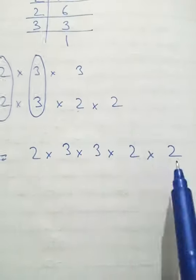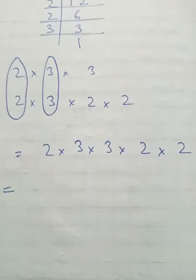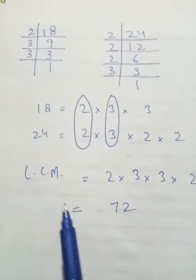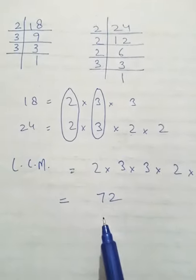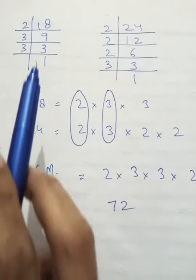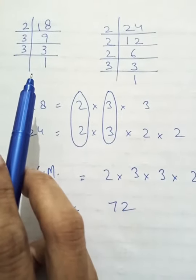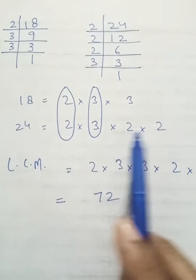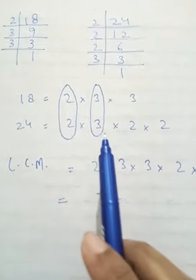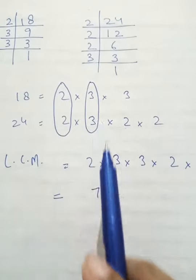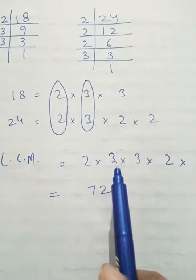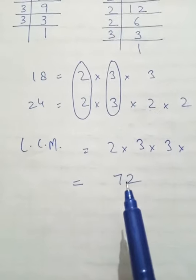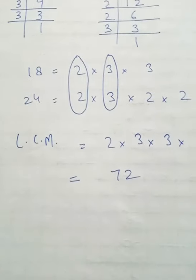Common factors को एक दफा लिखा — 2 एक दफा, 3 एक दफा — और बाकी factors: 3, 2, 2. इनको multiply कर लो। The answer is 72. तो LCM of 18 and 24 = 72. समझ में आया? 18 का prime factorization किया, फिर 24 का, दोनों के factors लिखे, common को circle किया, एक एक दफा लिया, बाकी सब multiply किया — LCM मिल गया।